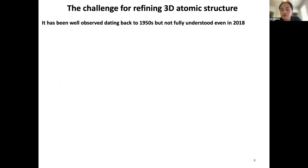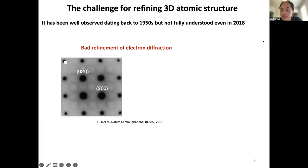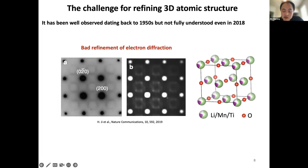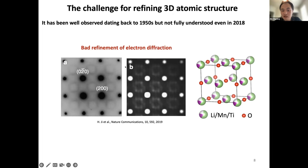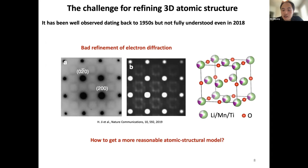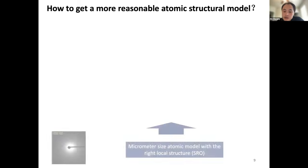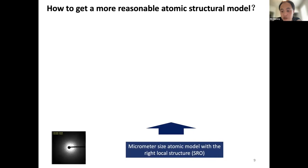This short range order has been observed since the 1950s in metal alloys. Until 2018, when I started research in this field, we realized this short range order is actually confusing — you cannot simulate it in a typical way. A naive simulation of electron diffraction by randomly placing cations into the disordered rock salt lattice doesn't look similar to experiments, and you lose symmetry information — you see rings in experiments but barely any symmetry in simulation. This is the computational challenge: how do we simulate images closer to experimental observations?